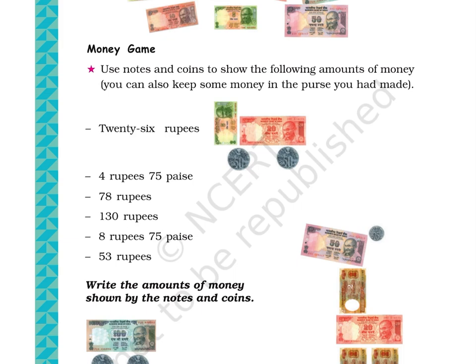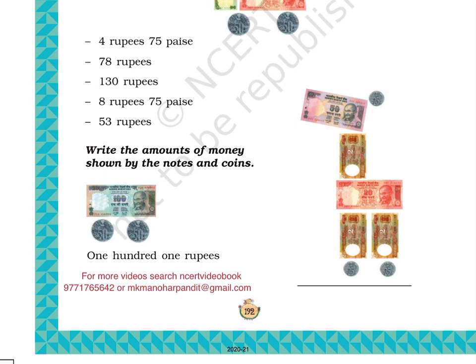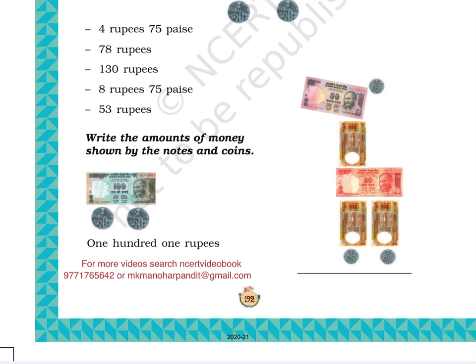Question 2: Write the amounts of money shown by the notes and coins. Part A: The given picture shows 1 hundred-rupee note and 2 coins of 50 paise. Part B is solved as an example: 101 rupees is written below the picture. Part B: The given picture shows 1 fifty-rupees note, 3 twenty-five paise coins, 3 two-rupees notes, and 1 twenty-rupees note. Blank space is given below to write the answer.